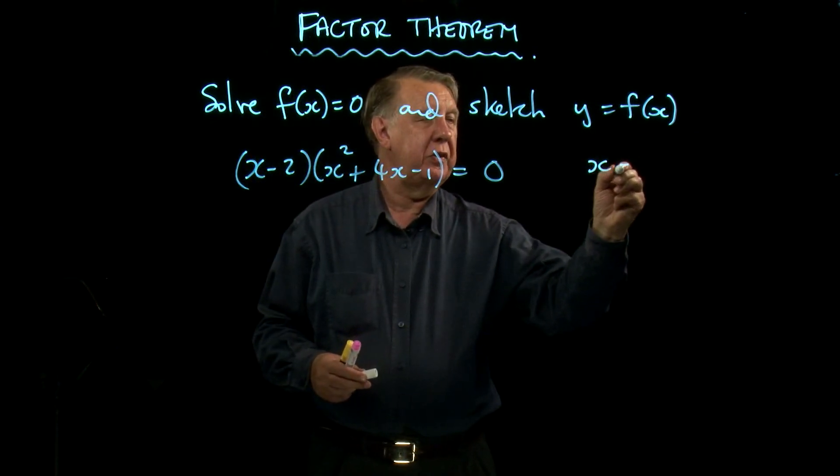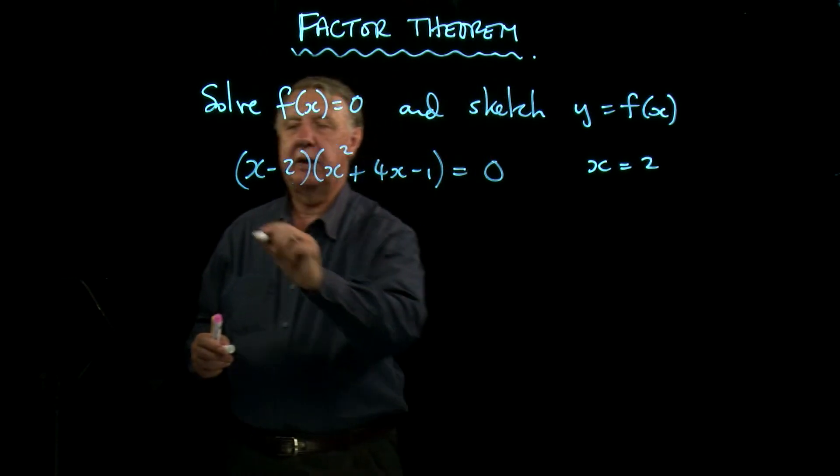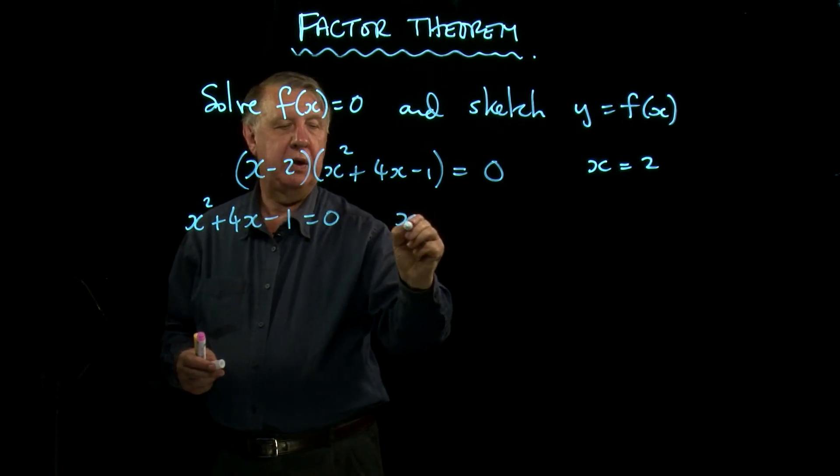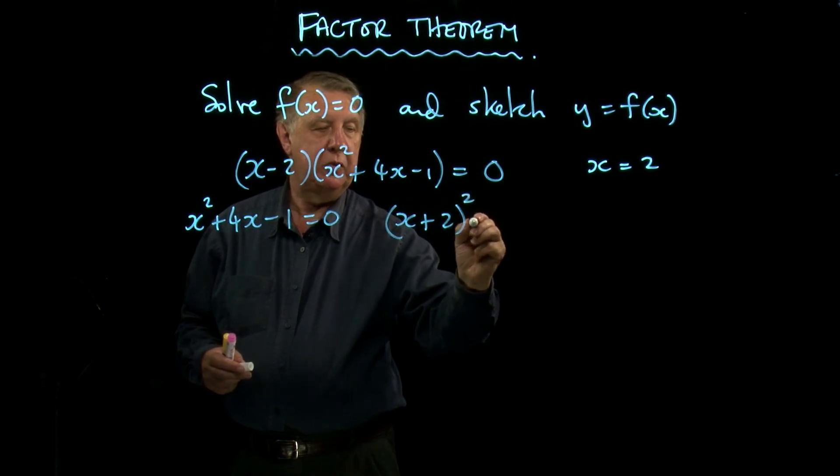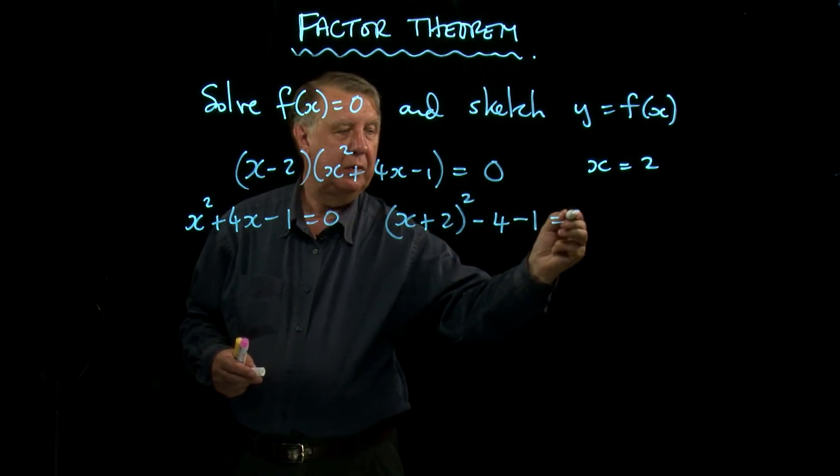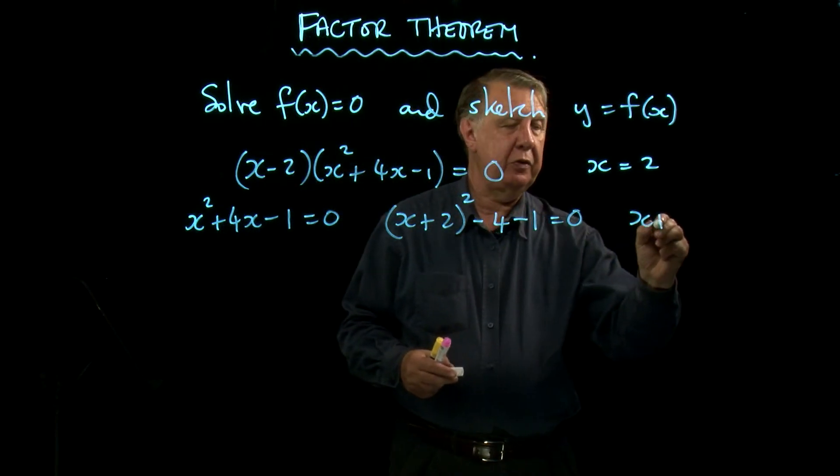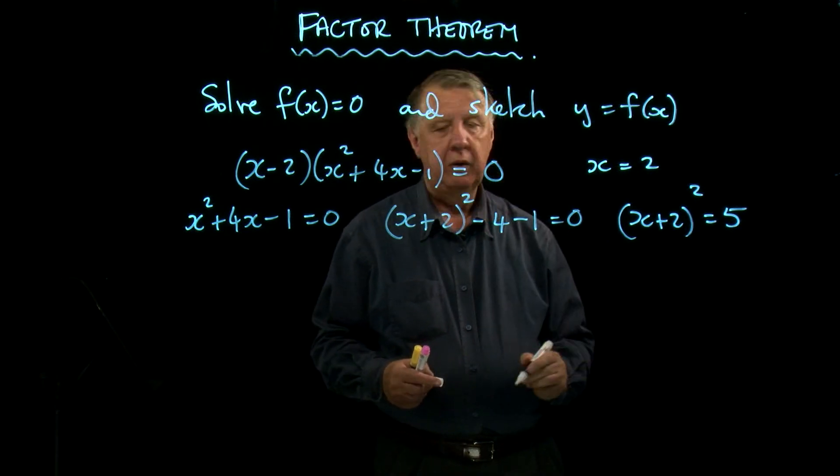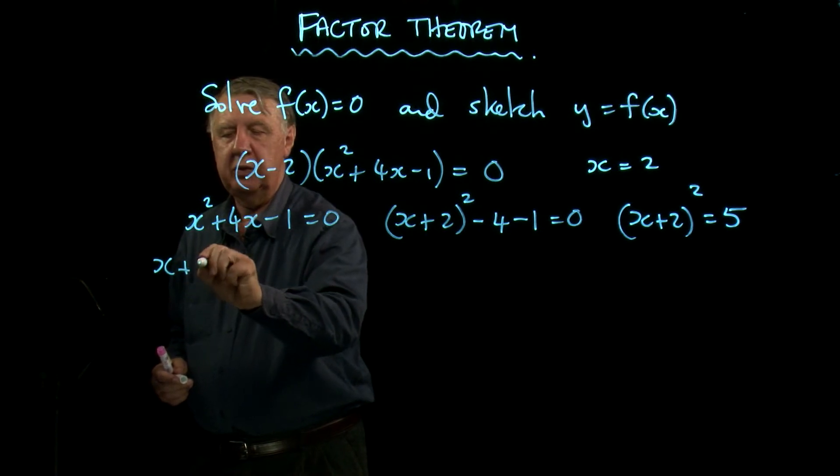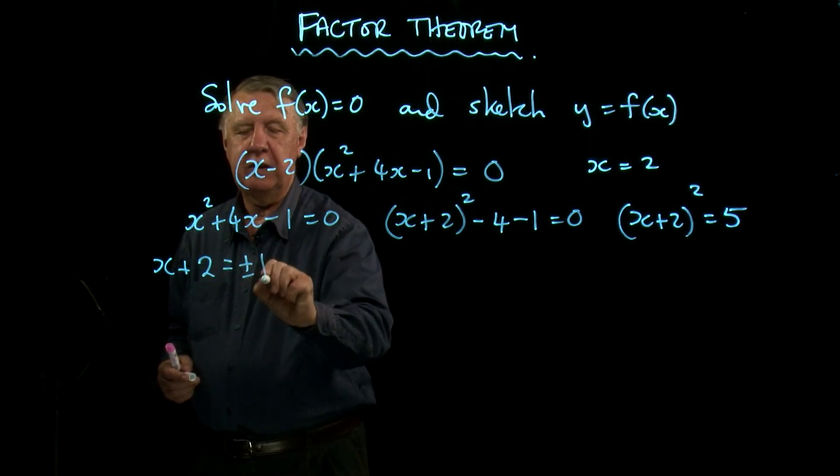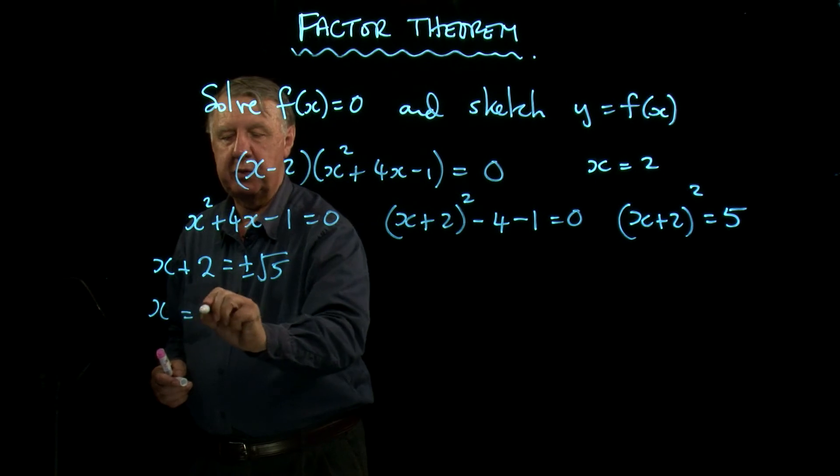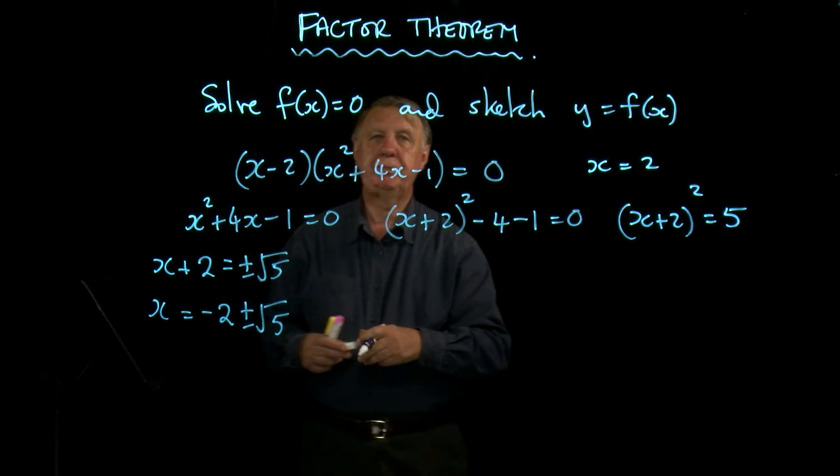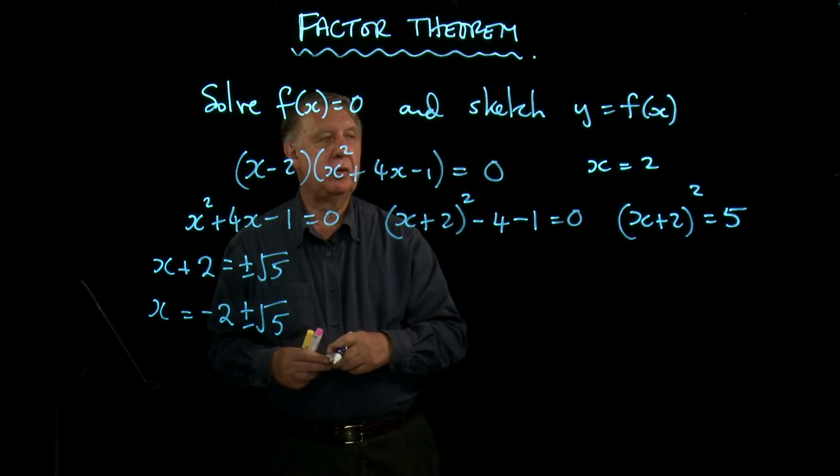I then have my quadratic, complete the square, take away 4 and the other one. So (x + 2)² = 4 + 1, which is 5. Therefore, x + 2 = ±√5, x = -2 ± √5. And I've got my three solutions.